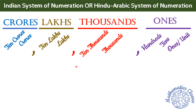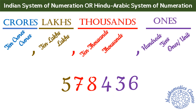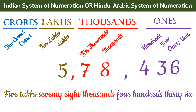Indian system में पहला comma after three digits आएगा। And then हर दो digits के बाद हम comma का use करेंगे। For example, consider this number having six digits: 5, 7, 8, 4, 3, 6. We will put the first comma after three digits starting from the right, then after every next two digits. So we can easily read our number as 5,78,436.